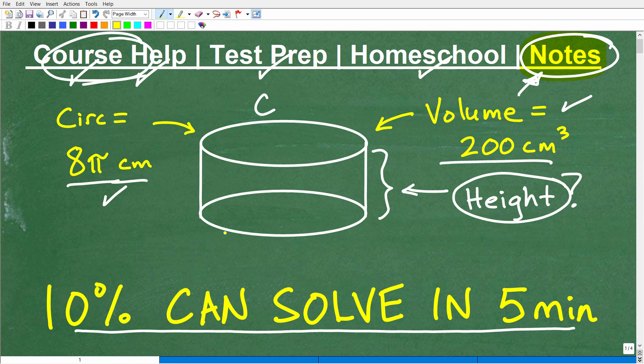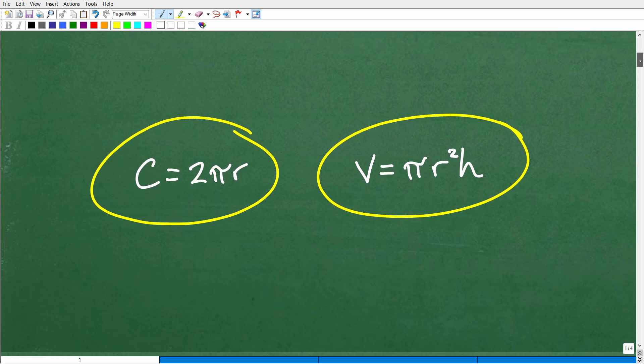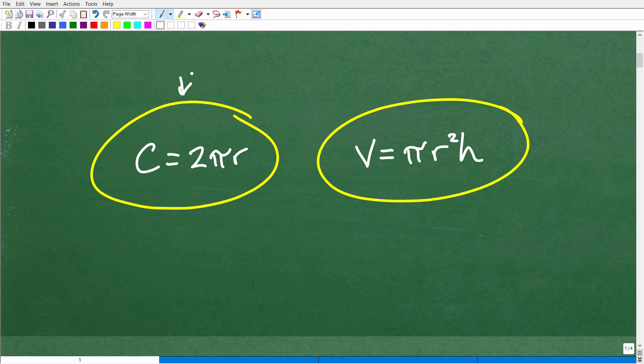What type of shape are we dealing with? Well, this is a cylinder. This is what this is. Think of it like in your pantry, like a soup can or something like that. That's effectively what a cylinder is. So we're talking about the volume of a cylinder is 200 centimeters cubed, and the circumference, which is the distance around, is 8π centimeters. We want to find the height of this particular cylinder.